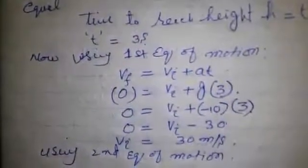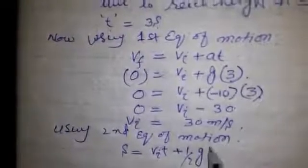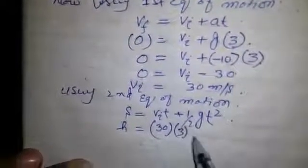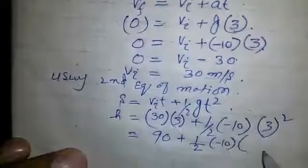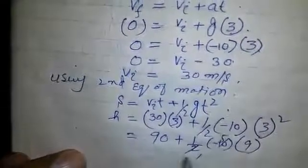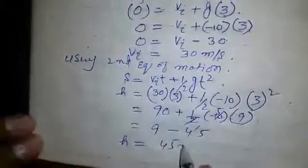S equals Vit plus half gt squared. S is the height, Vi we find here 30 meter per second into 3 the time, plus half into minus 10 into 3 squared. S equals 90 plus 1 over 2 into minus 10 into 9. 90 minus 45 which equals 45. H equals 45 meter.